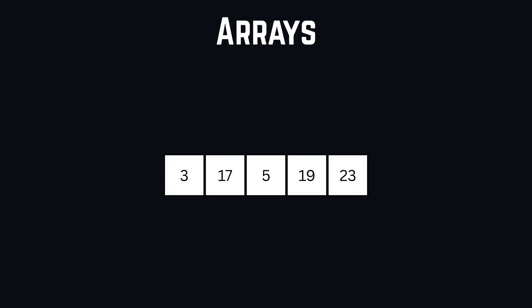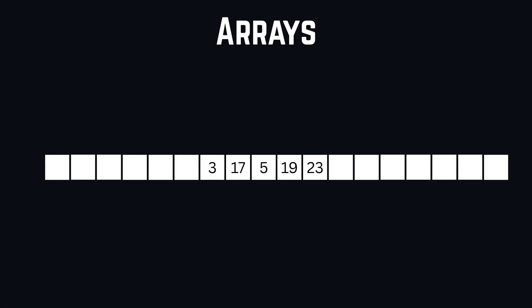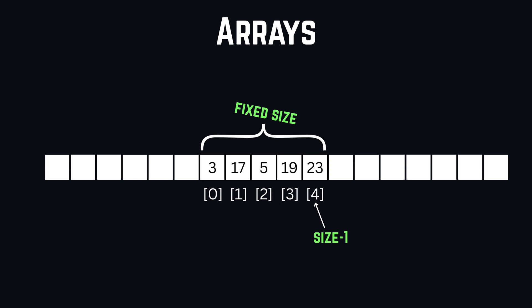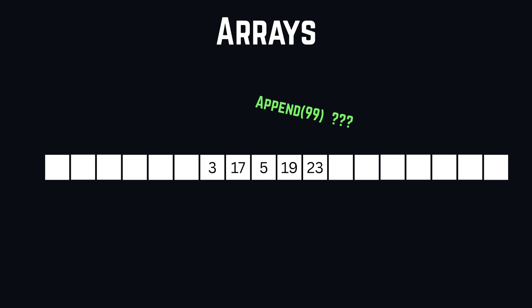The first and most fundamental data structure is the array. It can store multiple elements in a contiguous memory location. It has a fixed size, and each element in the array is identified with an index that goes from 0 to size minus 1. We can access and override values in the array within a time complexity of O(1). If we have dynamic arrays, appending elements to it is also possible despite it having a fixed size.